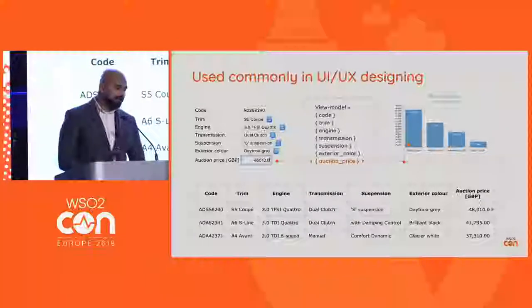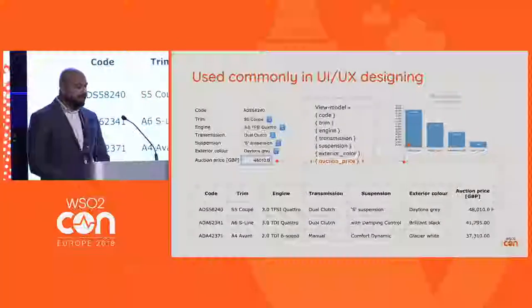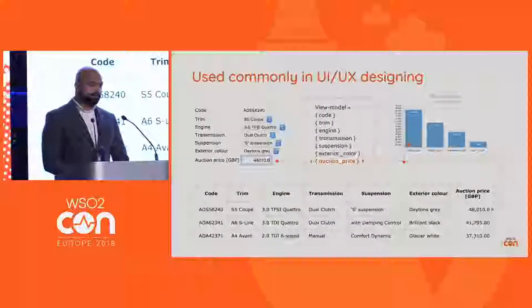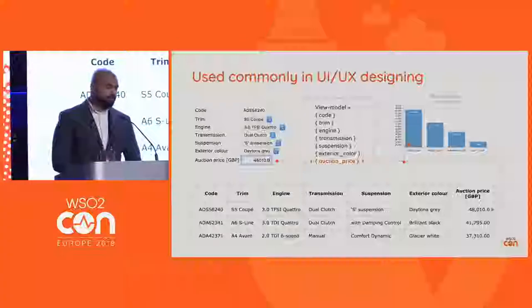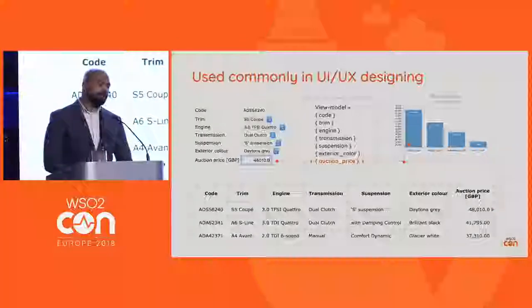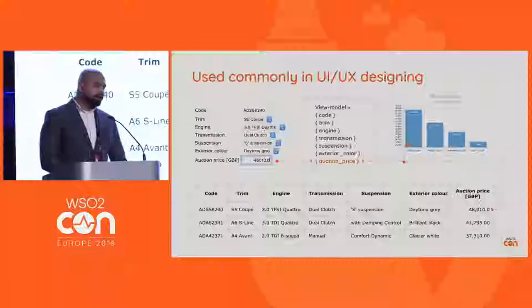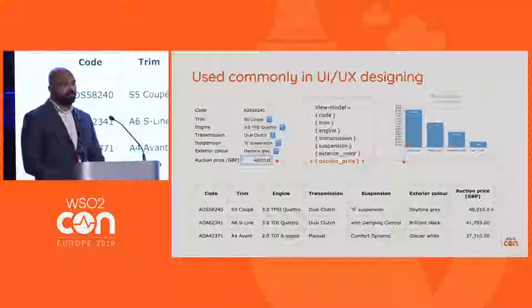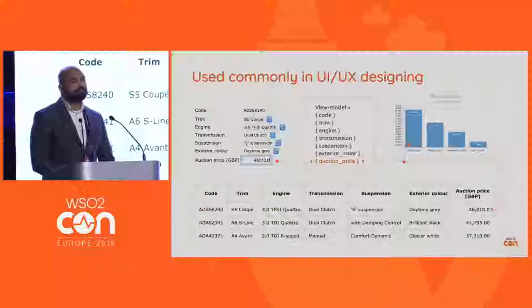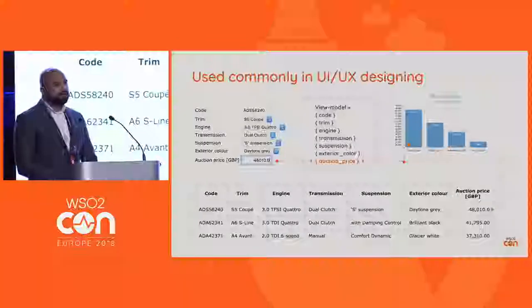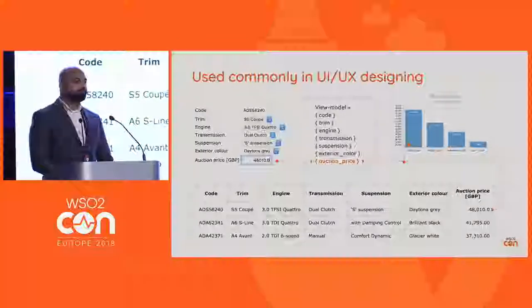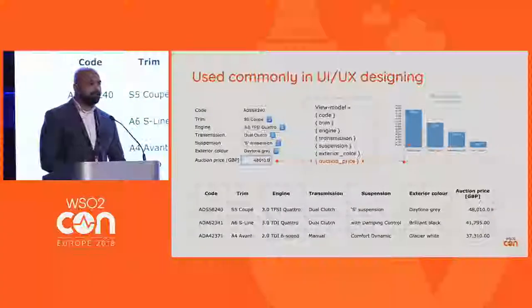In this picture you can see there is a text box called auction price and a chart depicting the prices of different cars available in a particular auction, along with a data table underneath. As you keep editing the text box, it continuously modifies the values in the graph as well as the table.